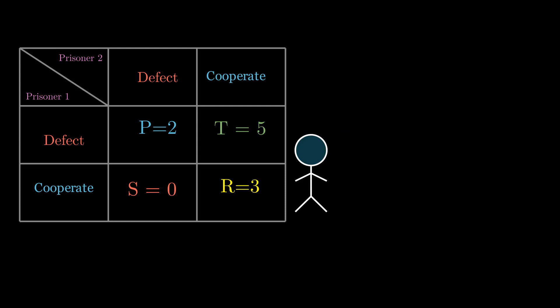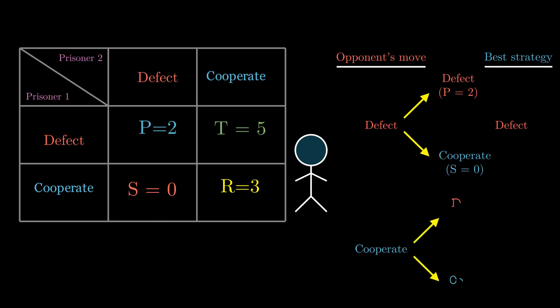But let's peek through one prisoner's perspective. If the other prisoner defects, defecting is the best alternative for him because if he doesn't, he is going to be a sucker and earn no points. If the other person cooperates, defecting again is his best alternative because that way he will win maximum reward of five points.